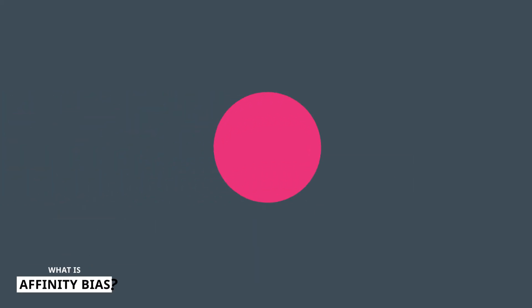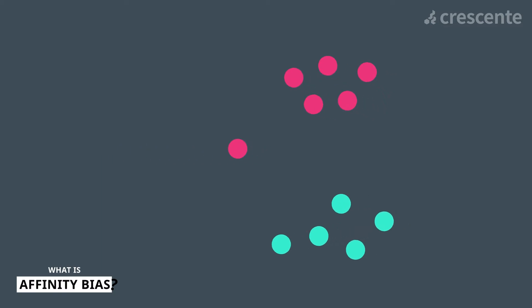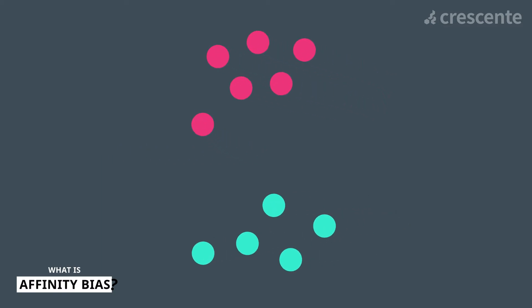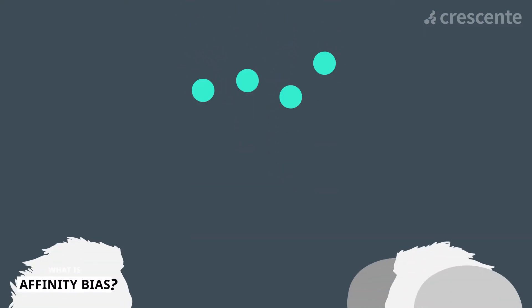Affinity bias is a person's tendency to create a connection and gravitate towards people who look and seem most like themselves. Further to this, affinity bias may cause us to avoid or dislike people who are different from us.